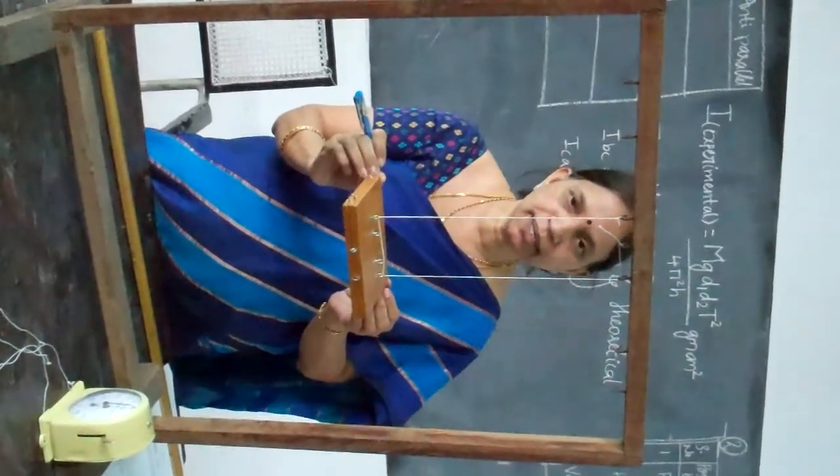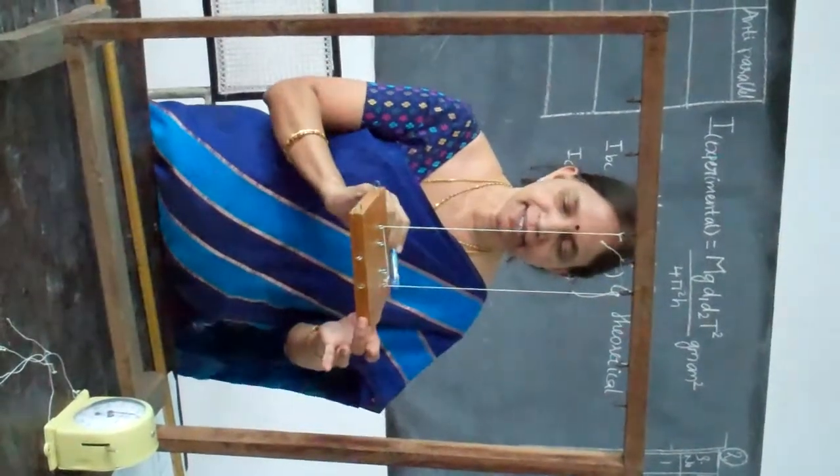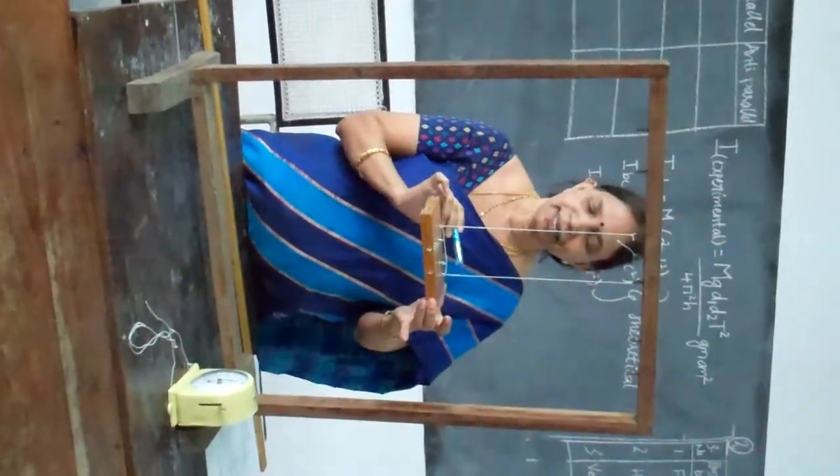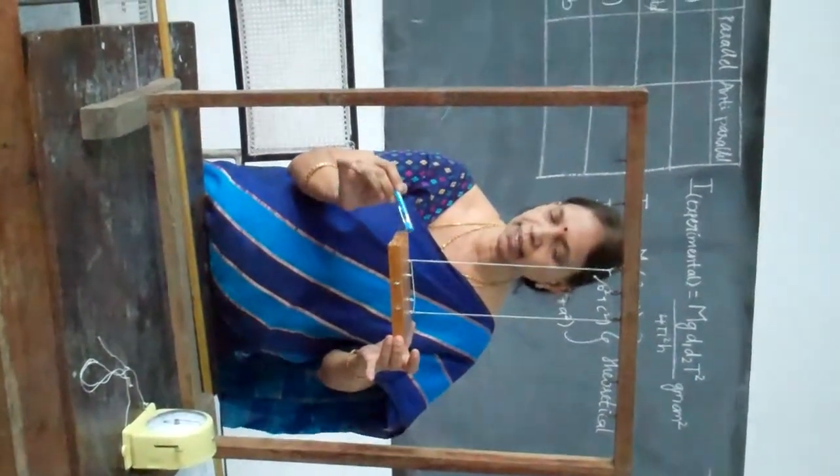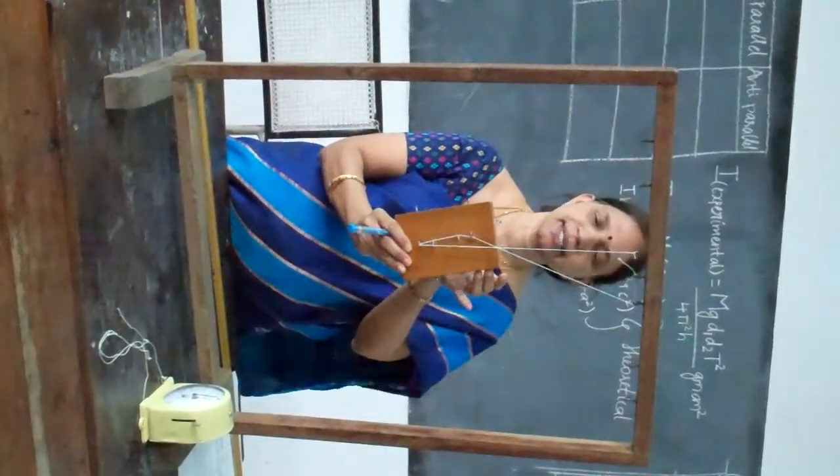You understand how to verify the perpendicular axis theorem and measure the moment of inertia. This, as you can see, is a rectangular lamina. I have three different planes: A, B and C. This is your AB plane, this is your BC plane, and this is your CA plane.